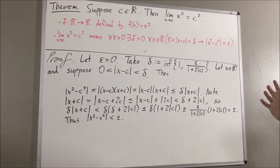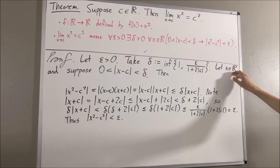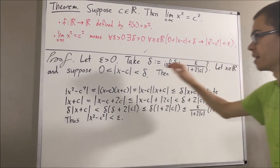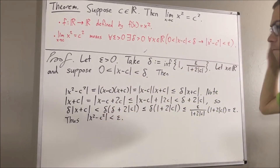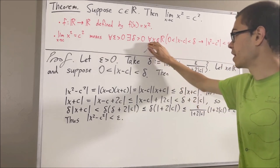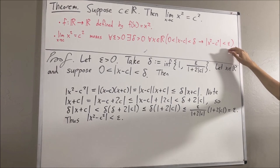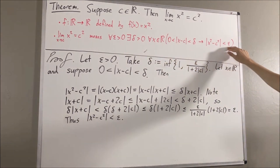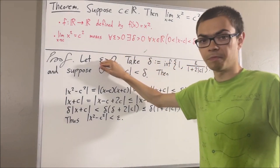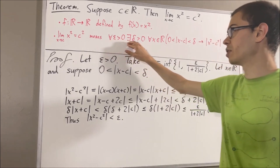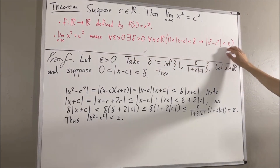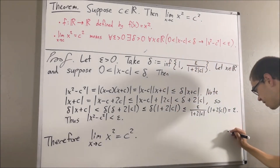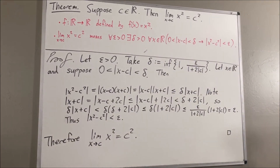Now let's put this all together. Under the assumption that x is a real number, we have shown: if zero is less than absolute value of x minus c less than delta, then absolute value of x squared minus c squared is less than epsilon. Since x is arbitrary, this means we have shown this for all real numbers x. So we have found a value for delta which makes the statement true. We proved this under the assumption of some arbitrary epsilon greater than zero. Since epsilon was arbitrary, we have shown this for all epsilon greater than zero. So we have proven the entire statement, which means we have proven the limit. That is exactly what we wanted to prove, and this completes the proof.